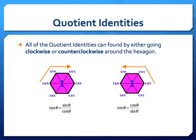For our quotient identities, all of our quotient identities can be found by either going clockwise or counterclockwise around the hexagon. Pick a spot along the hexagon that you want to start, say tangent, and going clockwise, I can say tangent is equal to sine over cosine. I can start anywhere along the hexagon and go clockwise, and I can generate a quotient identity.